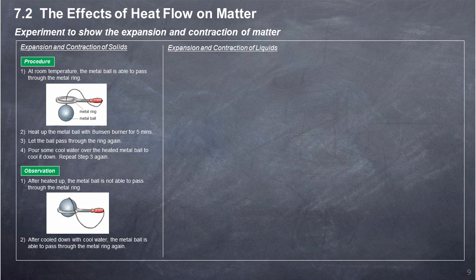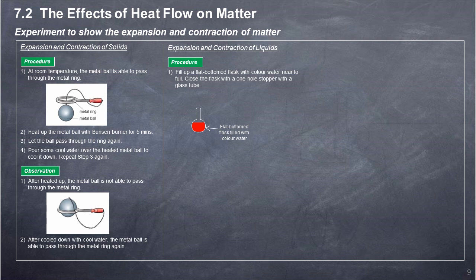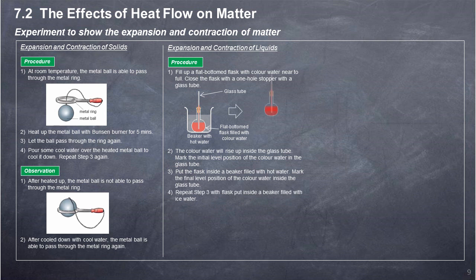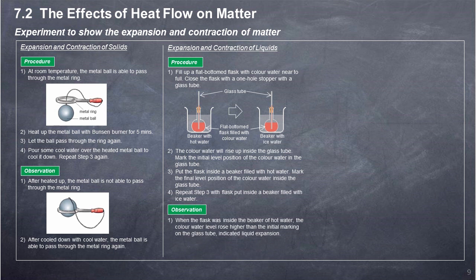Expansion and contraction of liquids. Procedure: Fill up a flat-bottomed flask with coloured water near to full. Close the flask with a one-hole stopper with a glass tube. The coloured water will rise up inside the glass tube; mark its initial level position. Put the flask inside a beaker filled with hot water and mark the final level position of the coloured water inside the glass tube. Repeat with the flask placed inside a beaker filled with ice water. Observation: When the flask was inside the beaker of hot water, the coloured water level rose higher than the initial marking, indicating liquid expansion. When inside the ice water, the coloured water level fell lower than the initial marking, indicating liquid contraction.